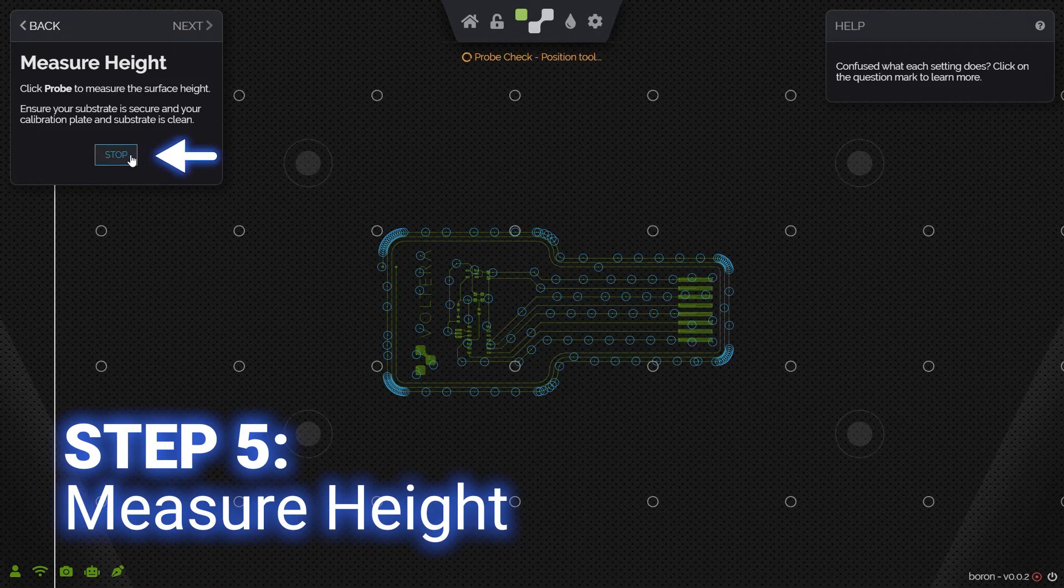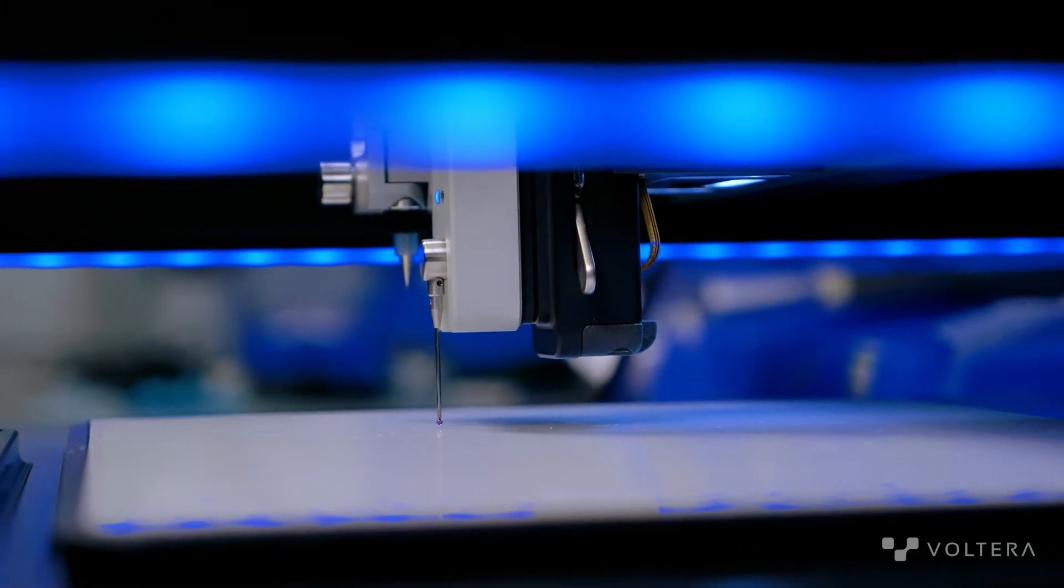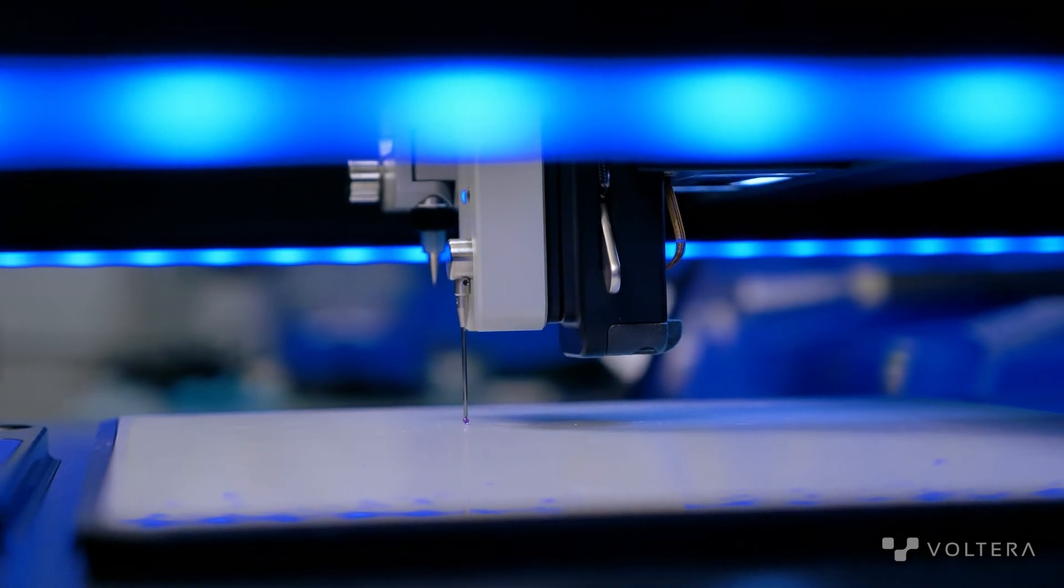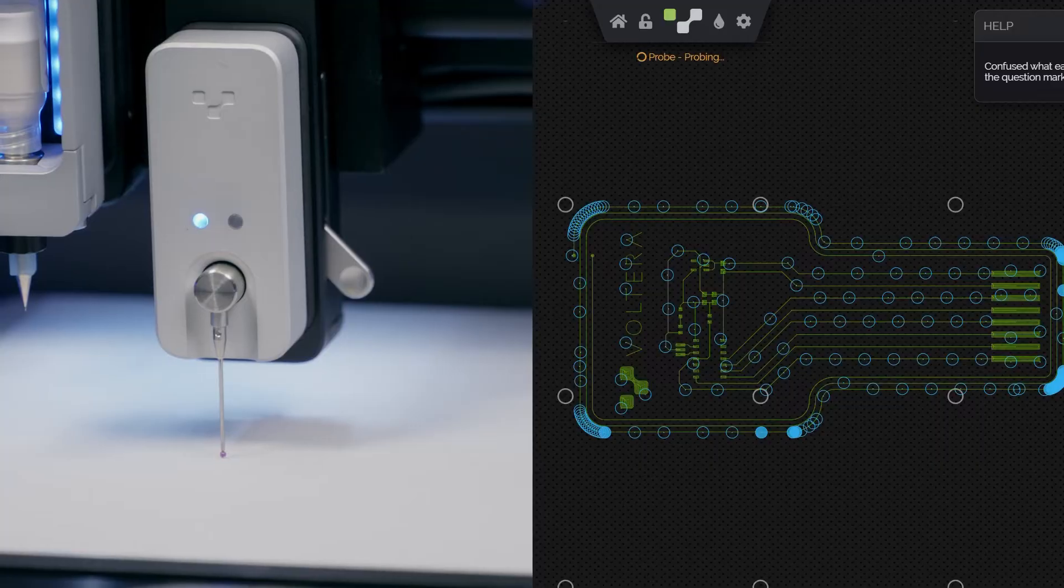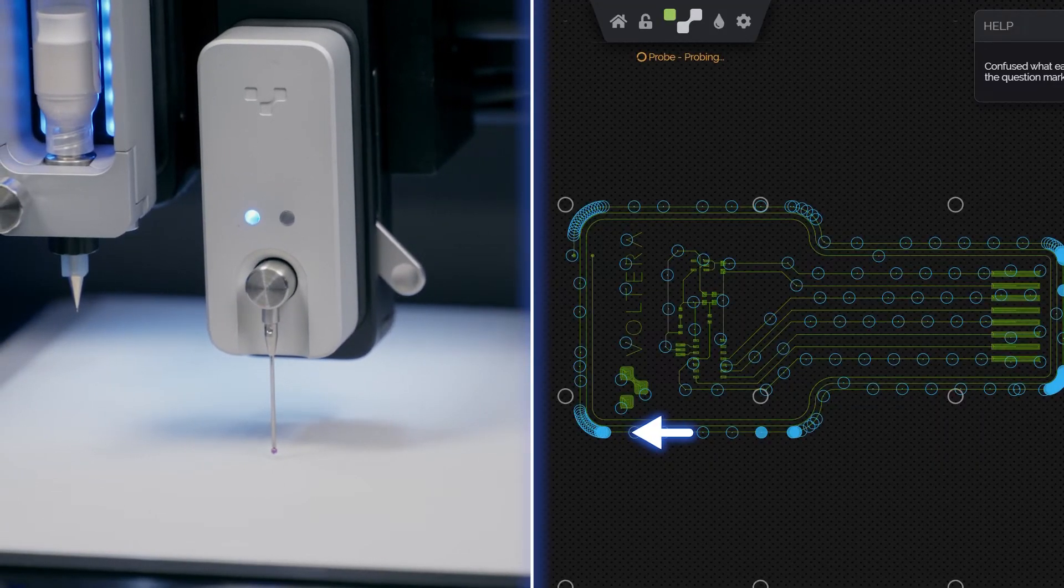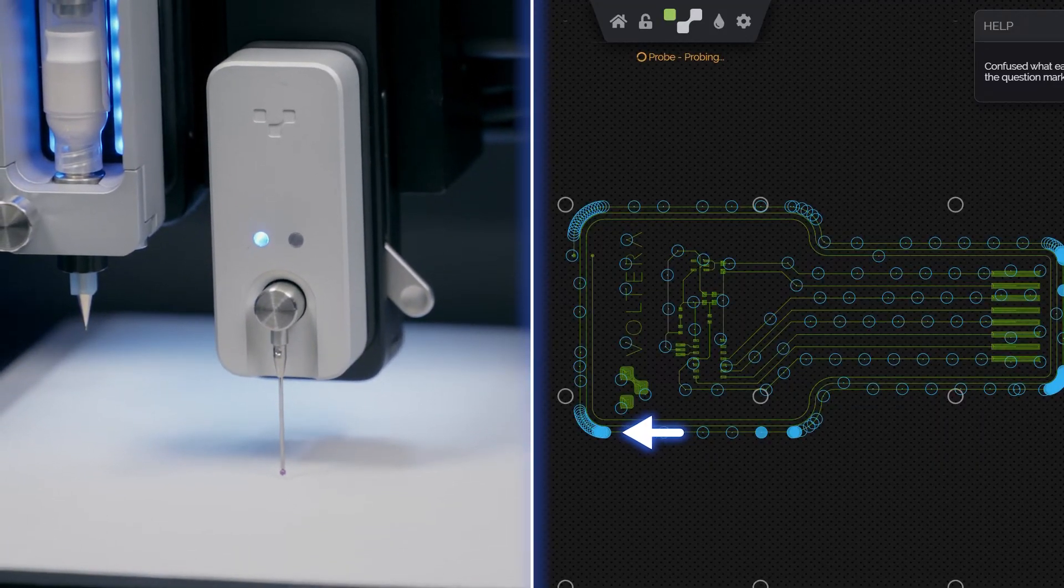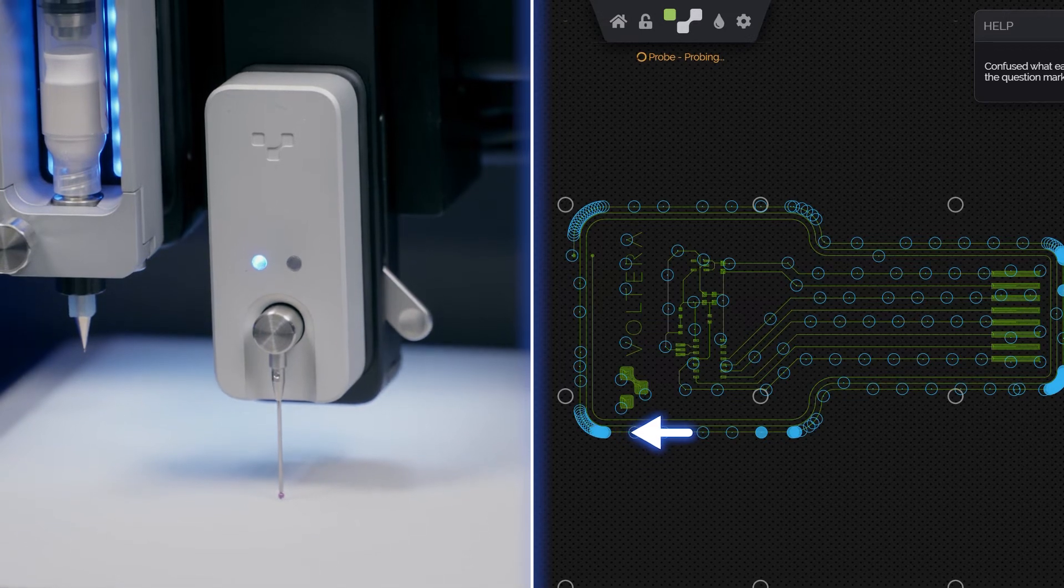NOVA will use this height map to automatically maintain a constant nozzle standoff distance, even if the substrate isn't totally flat. This will take about two to three minutes. As you can see here, as we map the surface, the screen is actually updating to let us know which points have already been measured.